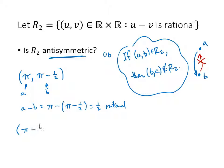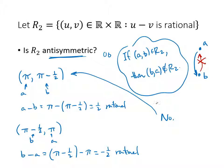Now our hypothesis is true, so this is a potential counterexample. Now let's check the conclusion. The conclusion asks about (b, a), whether that's in my relation. That's my b, and that's my a. So b - a is (π - 1/2) - π. That's -1/2, but that's also rational. And so this is a counterexample that shows that this relation is not antisymmetric. The answer is no. And then again, this is my counterexample.